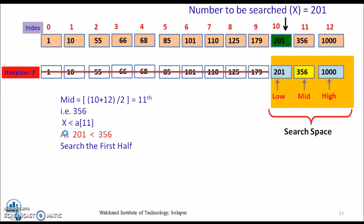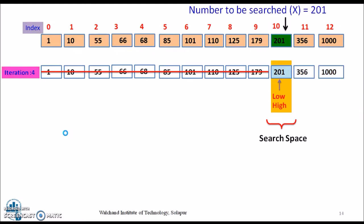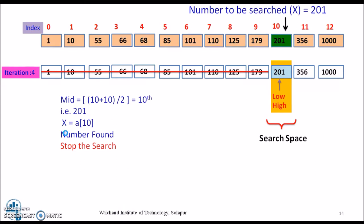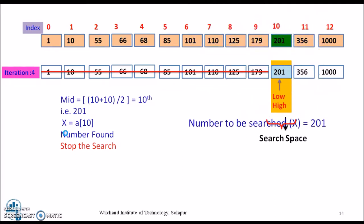The subarray with the elements before 356 is taken into consideration for the fourth iteration. Now the array consists of only one element — 201 — with the same low and mid, and the middle element is 201. Since 201 is the middle element, the iterations stop. The item is found.